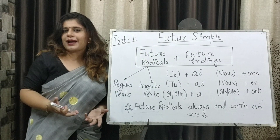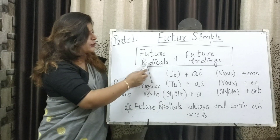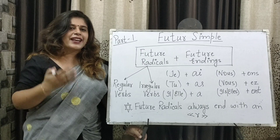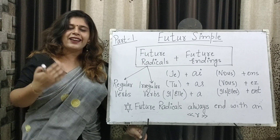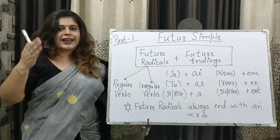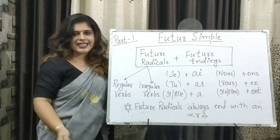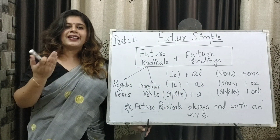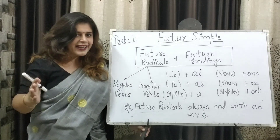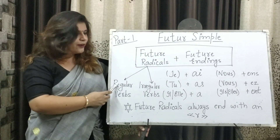Futur simple is the future tense in French. To start with the rule of futur simple, we have the future radicals and the future endings. The future endings are very simple in comparison to what we have done in passé composé. For all the verbs, irrespective of their category, we have the same endings: AI, AS, A, ONS, EZ, ONT. This makes it relatively simple.